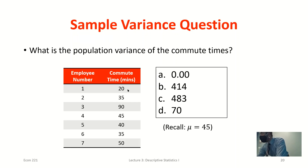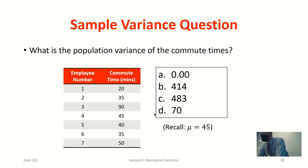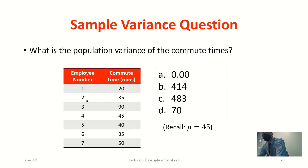I'll then go through every observation, subtract the mean, and square that deviation. For the very first one, it would be 20 minus 45, which is negative 25. Square that value — that's 625. Then 35 minus 45 is negative 10; square that, it's 100. I keep going through every observation doing that process. Once I'm done, I add them all up, and with a population variance I divide by the number of observations — so I'll divide by 7.